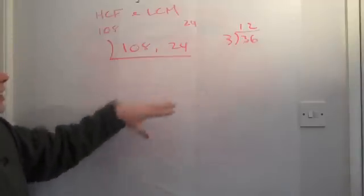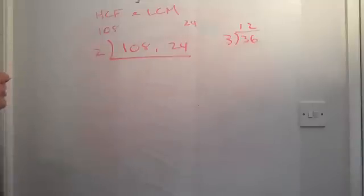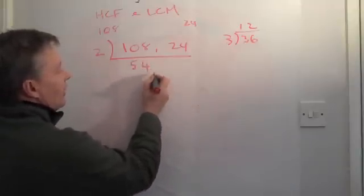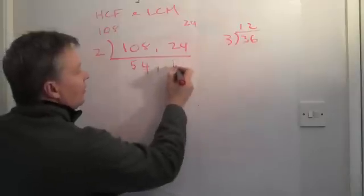So at the moment, I think that both of those numbers will divide by 2. And they will. So 2 will go into 108, 54 times. And 2 will go into 24, 12 times.